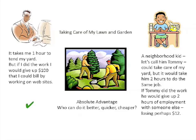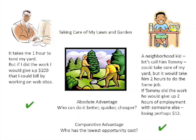For Tommy, working on my yard, he'd be giving up employment somewhere else, but he'd only be giving up perhaps $12 in the two hours he would spend on my yard. We then say that Tommy has comparative advantage. Comparative advantage goes to whoever has the lowest opportunity cost.